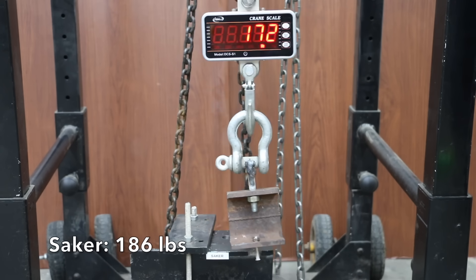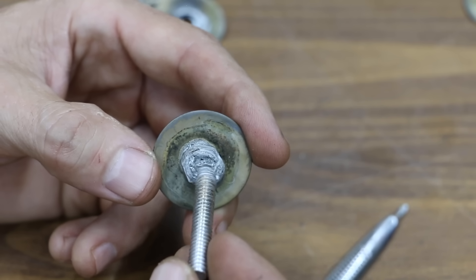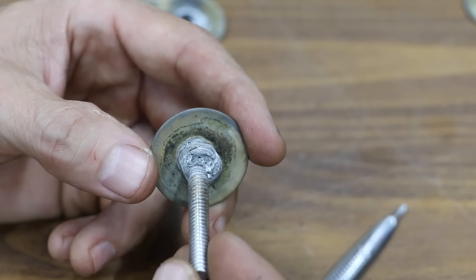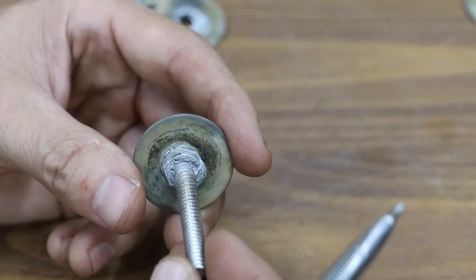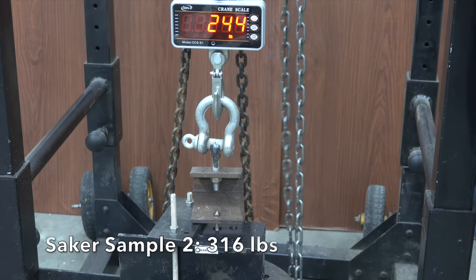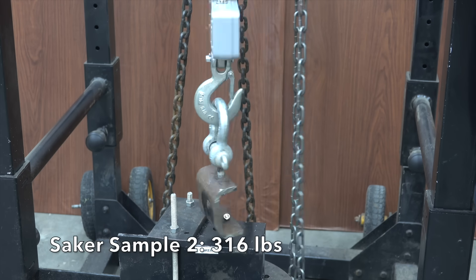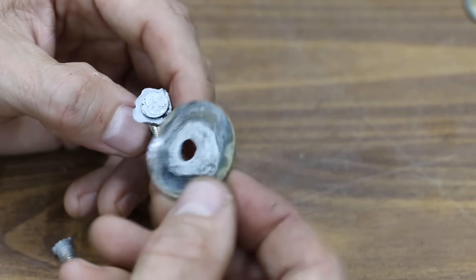186 pounds with Saker just isn't very good. The biggest challenge I had with Saker was getting the metal hot enough in order to melt the rod. Because of that, I overheated the bolt, the bolt failed, and not the weld. Let's try Saker again. 316 pounds on the second sample is better than the first, but still not as good as the competition.